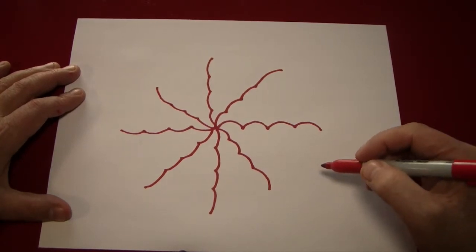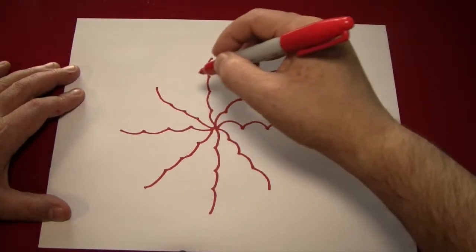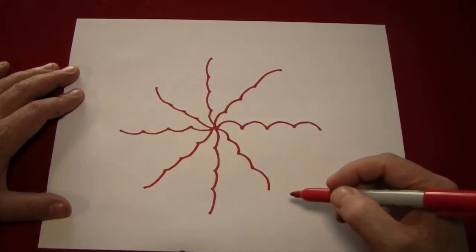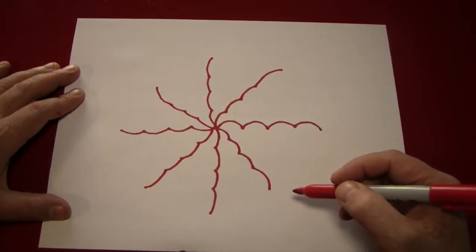So, it's as if all the curves are going around the circle in the same direction. Does that make sense? I hope it does.